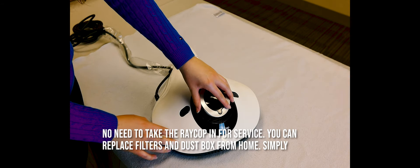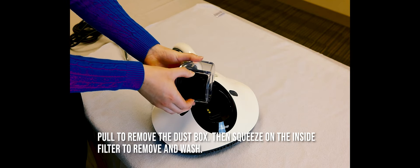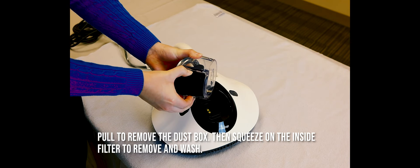Your RACOP light comes with a dust cap and a dust box filter. Remove the dust cap by pulling, then gently squeeze the dust box filter.